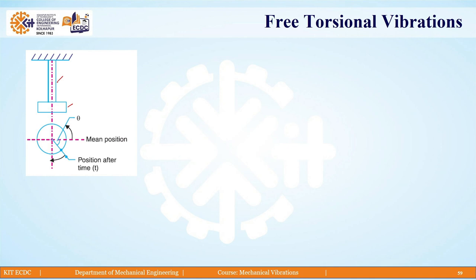To find the natural frequency of these torsional vibratory systems, we again use the free body diagram and apply D'Alembert's principle.